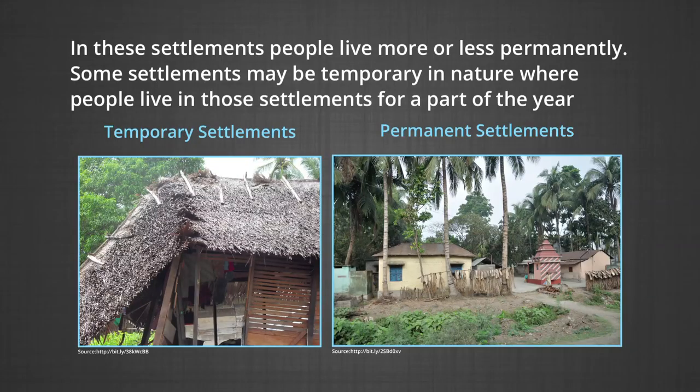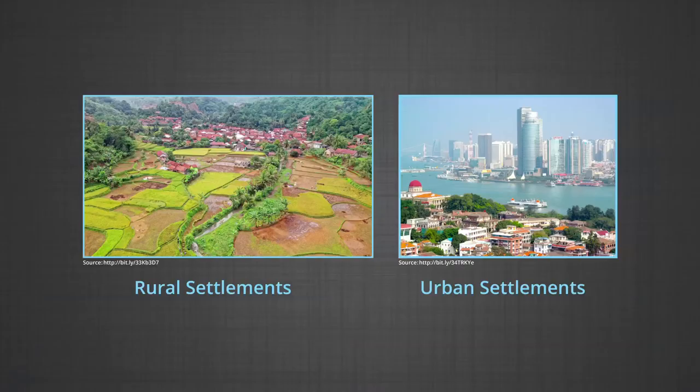In these settlements, people live more or less permanently. Some settlements may be temporary in nature where people live in those settlements for a part of the year. It is widely accepted that settlements can be classified into two major groups: rural settlements and urban settlements.